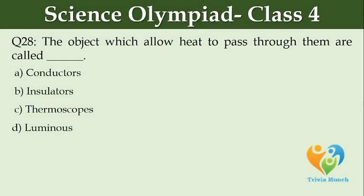The objects which allow heat to pass through them are called blank: Option A: conductors, Option B: insulators, Option C: thermoscopes, Option D: luminous.